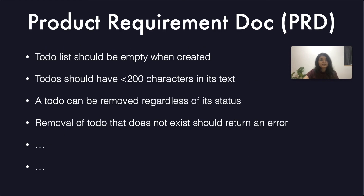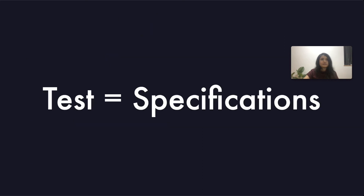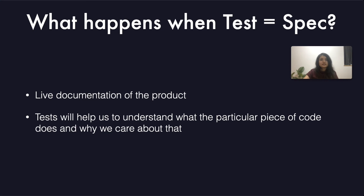The important thing to note is that the test names are the same as the list of requirements in the product requirement document. All of our unit tests are actually the same as the list of requirements — our tests have become our specifications. This is a common association in the TDD world, but it has nothing to do with TDD. Even if you write tests after your code, they should still be like specifications of your API or product. When your tests are same as your specifications, you get live documentation of the product that is guaranteed to be accurate, and our tests will help us understand what a piece of code is doing and why we care about it.